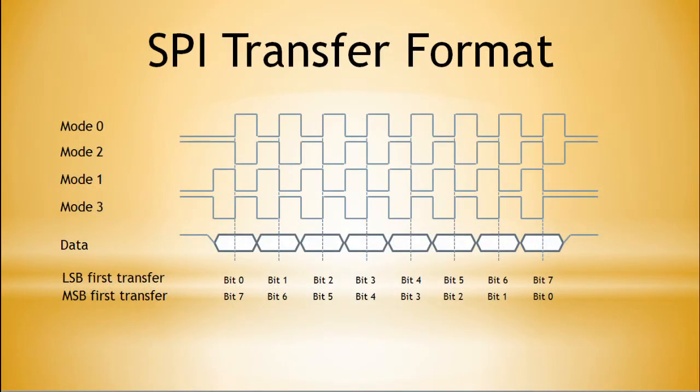SPI can use four data transfer modes by setting the polarity and phase of the clock, as shown in the figure. Mode 0 and Mode 3 sample the data at the SCK rising edge, while Mode 1 and Mode 2 sample the data at the SCK falling edge.